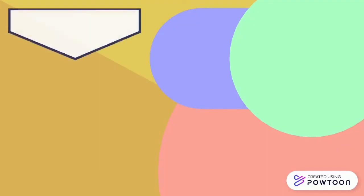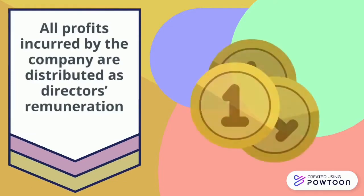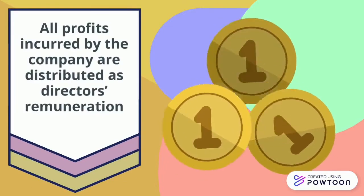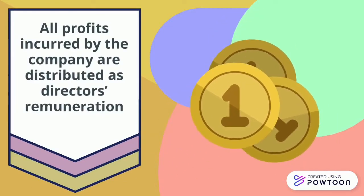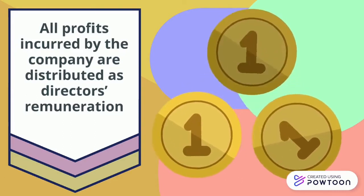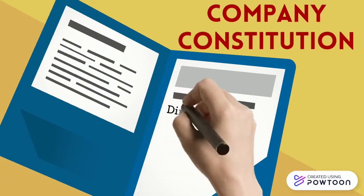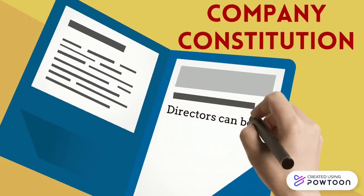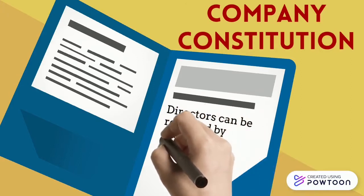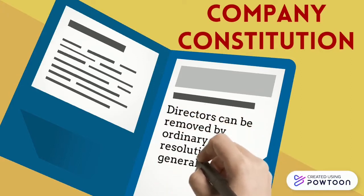All profits incurred by the company are distributed as directors' remuneration, meaning directors are compensated financially in exchange for the services they perform on behalf of the company. A clause in Supreme Flooring's constitution exists which sanctions the removal of a director by ordinary resolution in a general meeting.